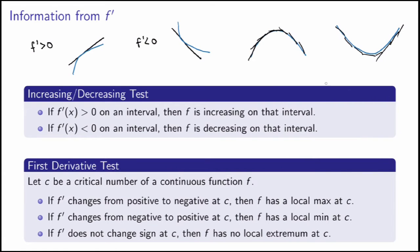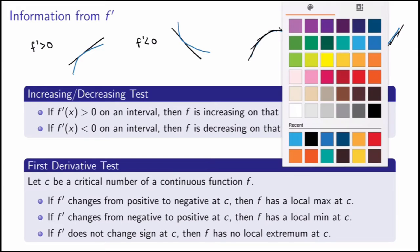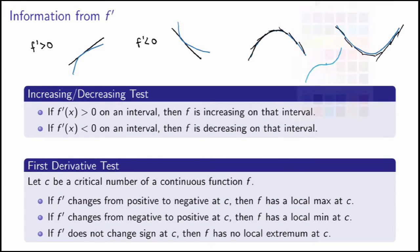If the derivative does not change sign at c, then f has no local min or max at that point. An example would be a function where the derivative is zero but positive on both sides of the critical point — the function has zero derivative there but it is not a local min or max.